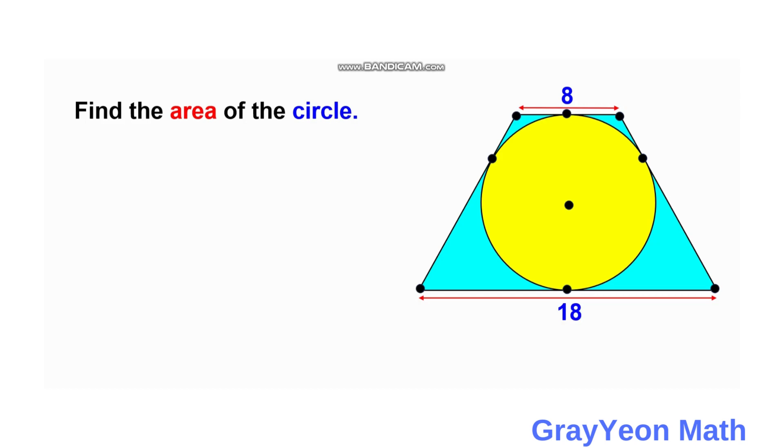Welcome to GrayonMath. We are asked to solve this problem. We have a trapezoid and inside this trapezoid is a circle inscribed, and these points are actually indications that this circle is tangent to the segments of this trapezoid. So we are required to find the area of the circle.